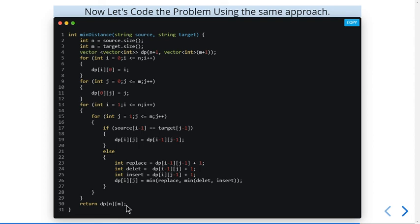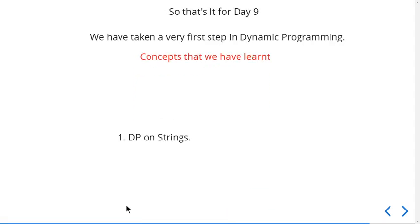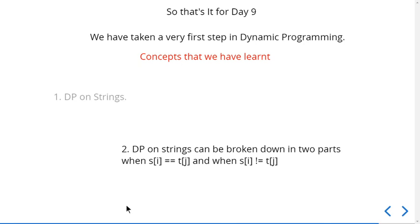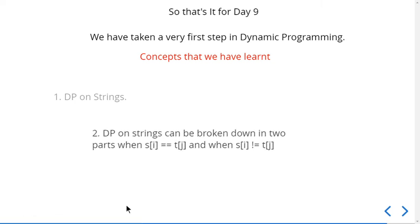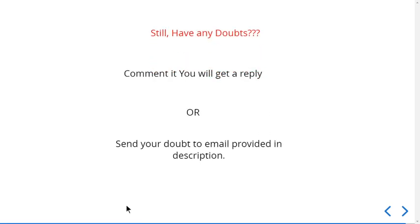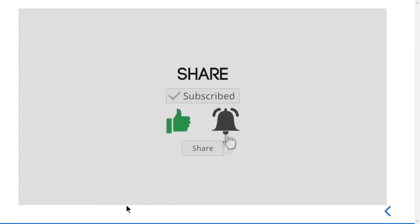This is a simple yet important problem. The key concepts are that you can use both DP with recursion and an iterative approach, and that you can easily convert the recursive formula to an iterative one. Observations are very important in dynamic programming — how you break the problem and apply observations is what we learned today. If you have any doubts, comment or email us. Please subscribe, like, and share the channel. Thank you for watching.